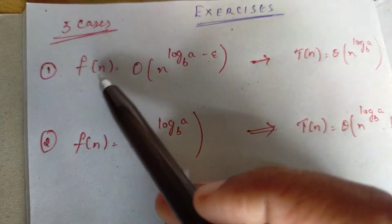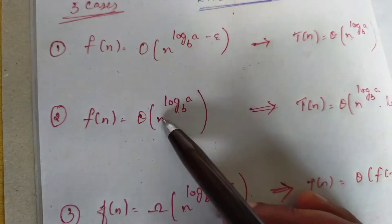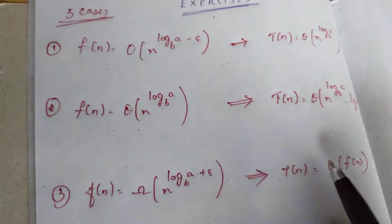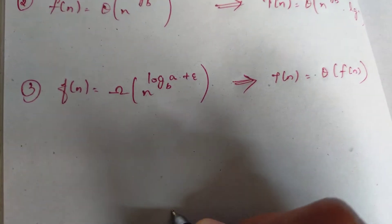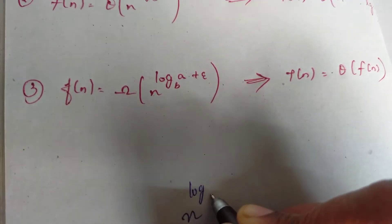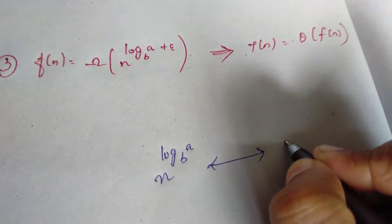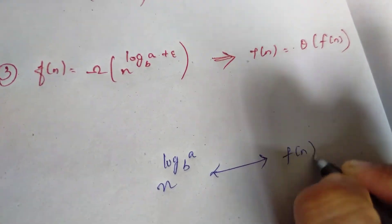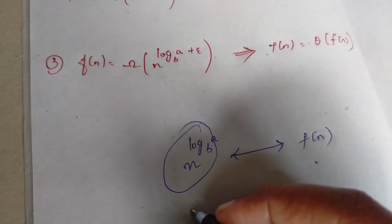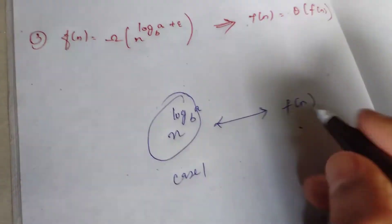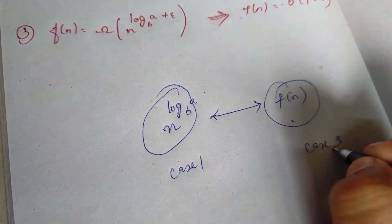First case: the value of f of n. Second case: the value of f of n. Third case: we will compare the value of n, then log a base b. We compare the value of f of n. We apply case 1 for the smaller angle value, and case 3 for the bigger angle value.